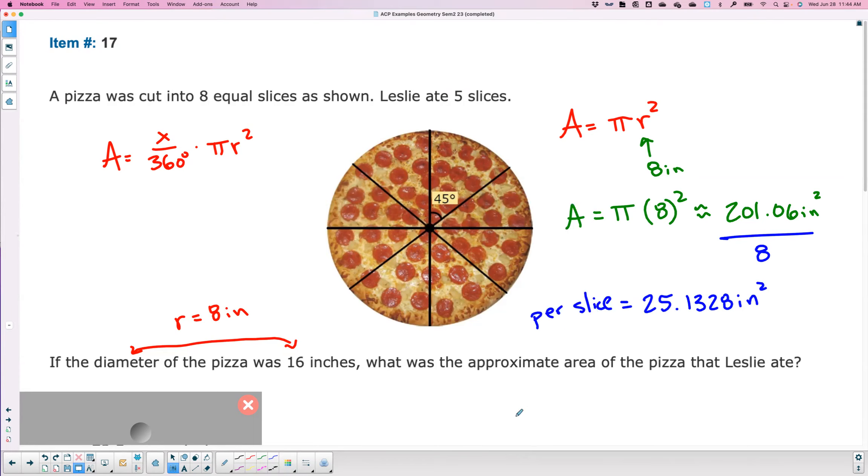Now how many slices did she eat? Five. So how do I find five slices? Five slices you multiply by five. So five times 25.13. What do you get? 125.66.